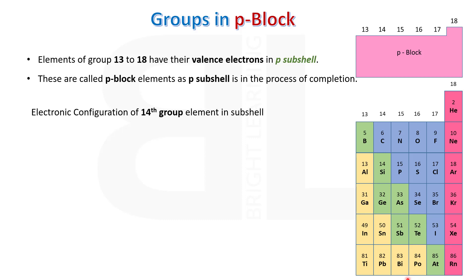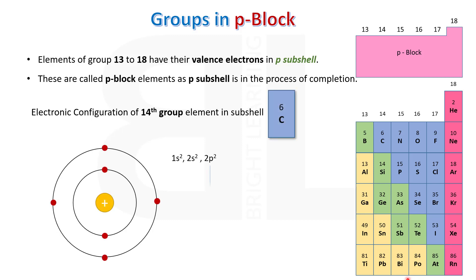We will discuss some elements of the 14th group first. Carbon belongs to the 14th group. The atomic number of carbon is 6. On writing its configuration, we get 1s2, 2s2, 2p2. As we can observe, P subshell is in the process of completion, so carbon with atomic number 6 is placed in P block elements.